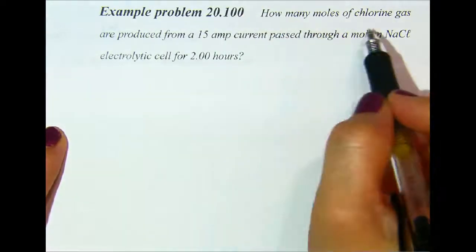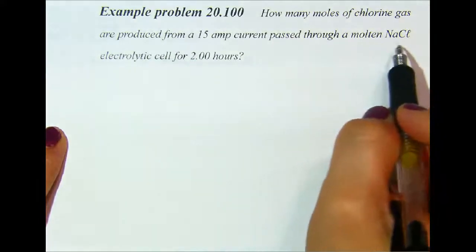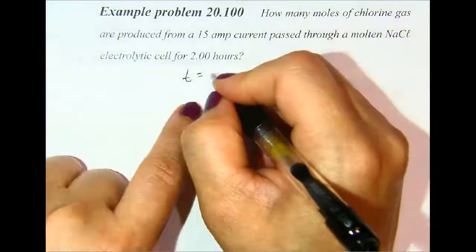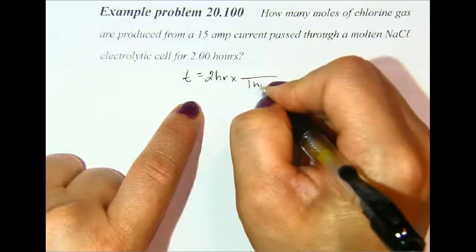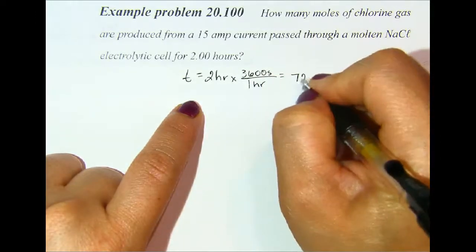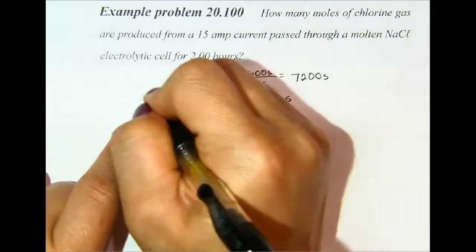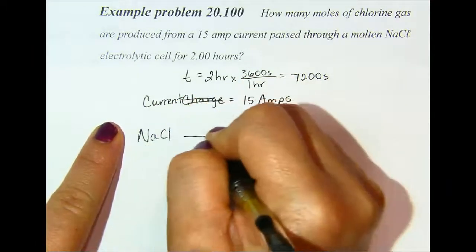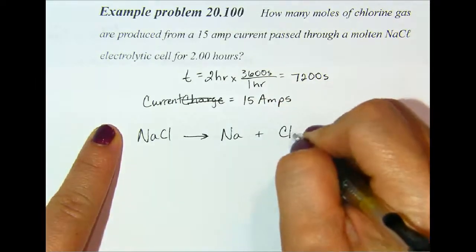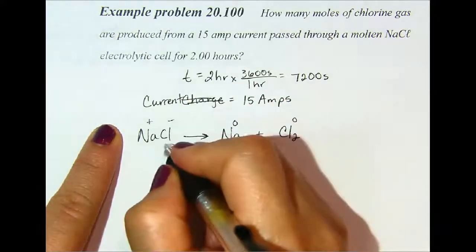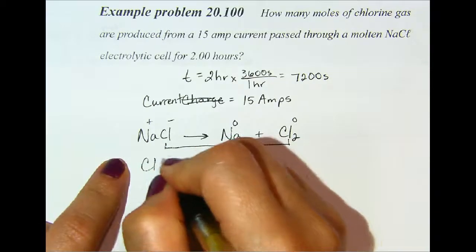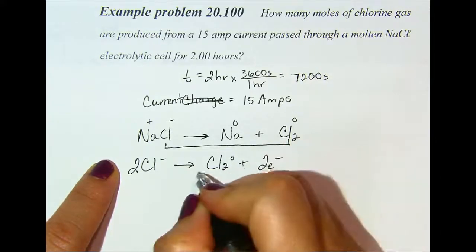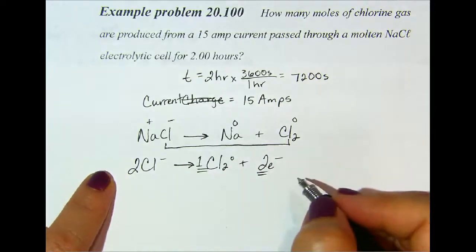Example problem 20.100: How many moles of chlorine gas are produced from a 15-amp current passed through a molten sodium chloride electrolytic cell for 2 hours? First, convert time to seconds: 2 hours × 3,600 seconds per hour = 7,200 seconds. We are given a current of 15 amps, and molten NaCl is converted to sodium metal and chlorine gas — oxidation states going from +1 and −1 to 0 and 0. The relevant half-reaction for chlorine is: 2 Cl⁻ → Cl₂ + 2e⁻. There is a 1-to-2 ratio between moles of Cl₂ and moles of electrons.